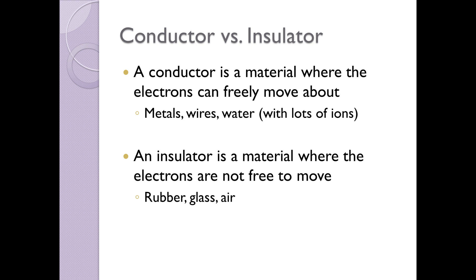An insulator, however, is a material where the electrons are not free to move. They protect you against electric forces and electricity. So an insulator, examples of that are rubber and glass and air. These are objects that pretty much don't allow electrons to move from one place to another.